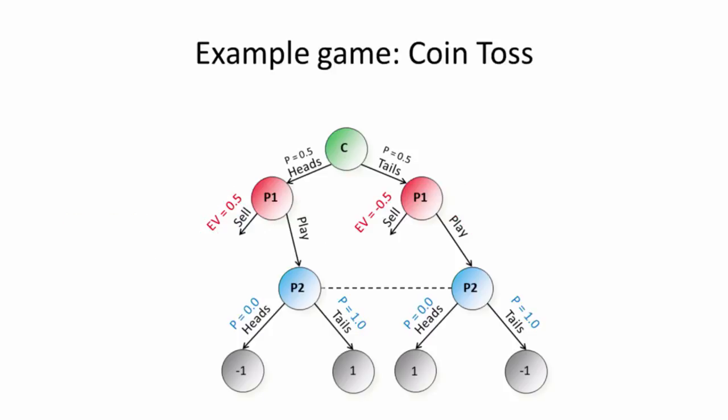On the other hand, if you always guess tails, then player one could adapt by always choosing play when the coin lands heads, and always choosing sell when the coin lands tails, and averaging $0.25 in the game. So it turns out that the optimal strategy is to mix. It's to guess heads with 25% probability and tails with 75% probability. Because if you do this, then no matter what player one does, they can't do better than an expected value of zero. So this is the Nash equilibrium strategy for player two in this game.